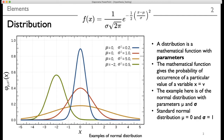Let us first of all understand what is a distribution. A distribution is a mathematical function. The mathematical function gives us the probability of a particular value of x. So if x equals v, it will give you the probability of x having the value v.